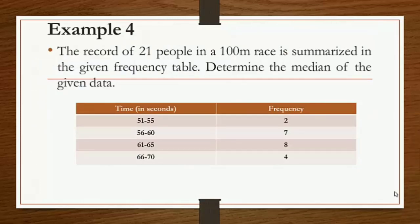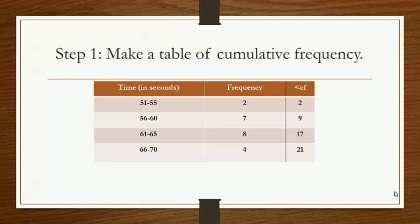Take this example. The record of 21 people in a 100-meter race is summarized in the given frequency table. Determine the median of the given data. We are given time in seconds and frequency. The first step is to make a table of cumulative frequency. Starting with 2, we add 7 to get 9.